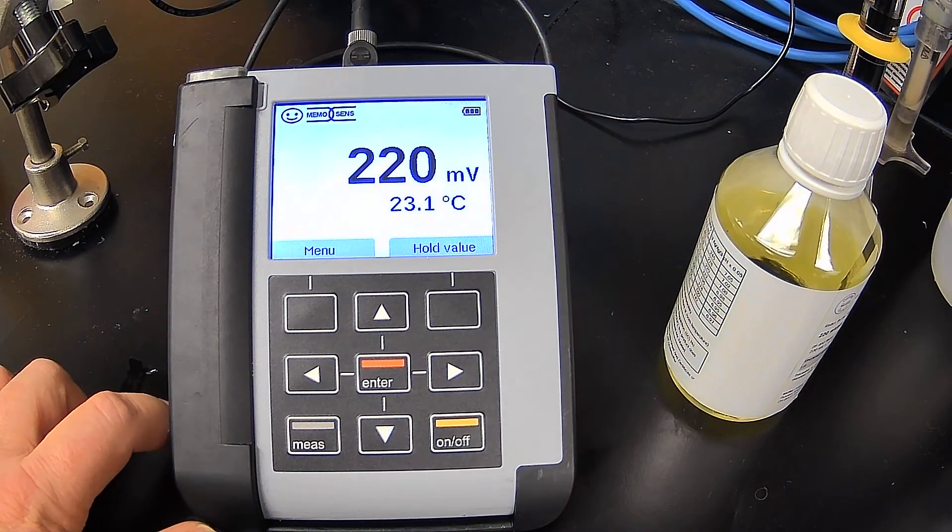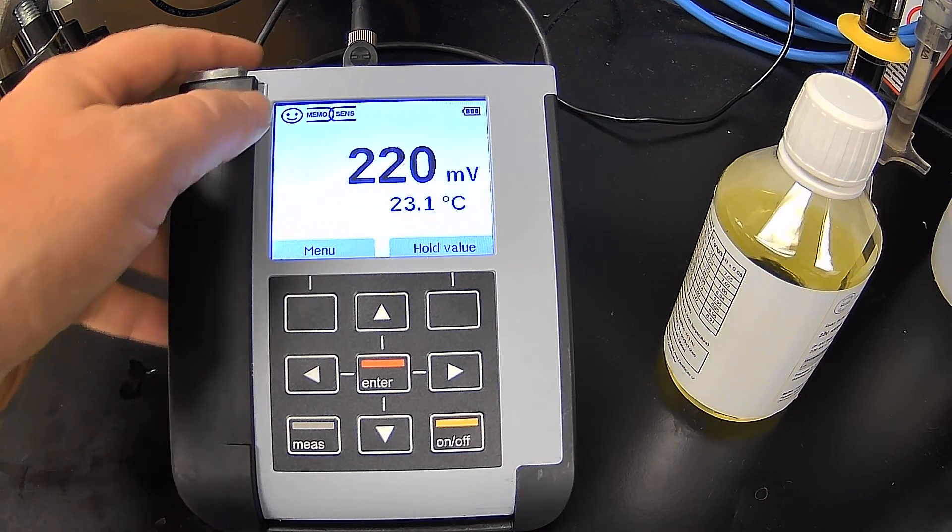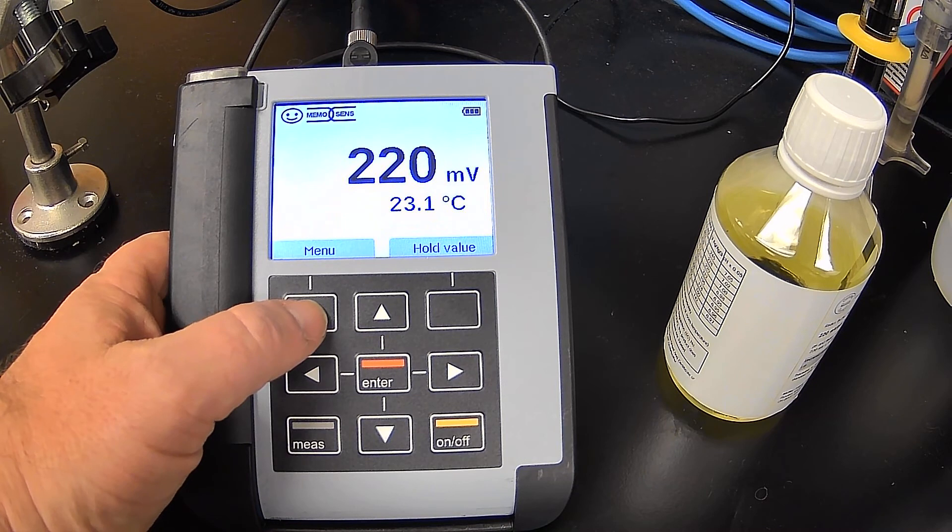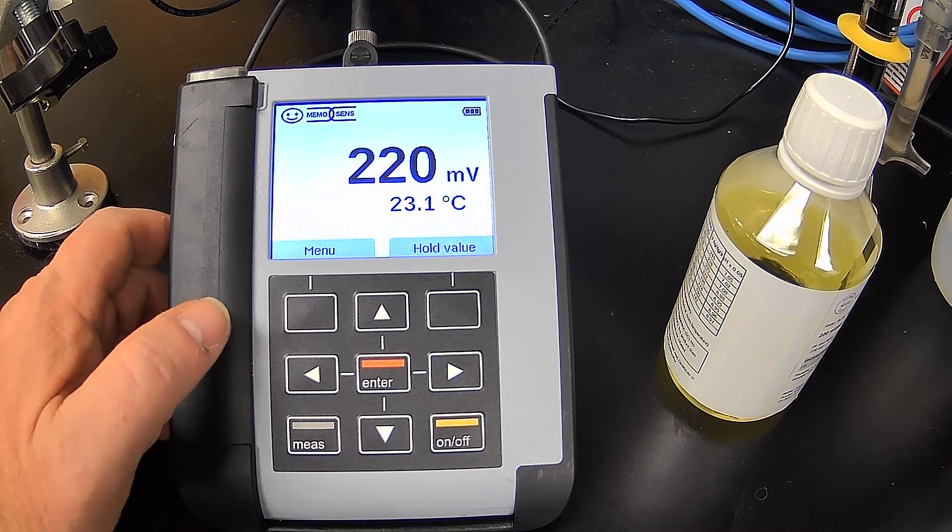There we go. So we're 220 millivolts. And we have our smiley, which is indicating that the calibration is good and there's nothing wrong with the electrode, nothing that would cause us any kind of a problem.